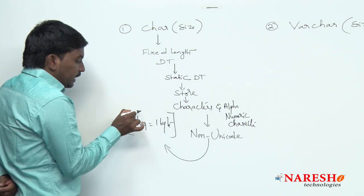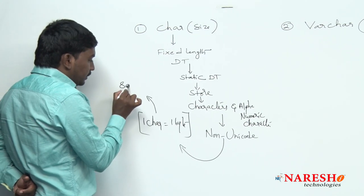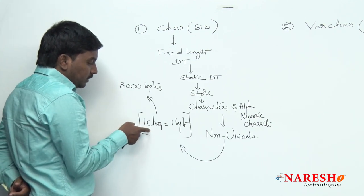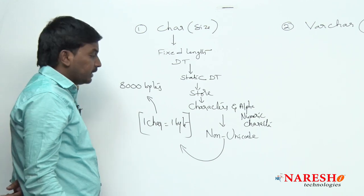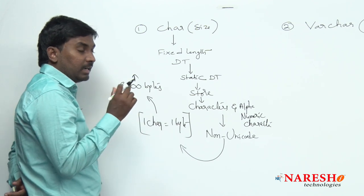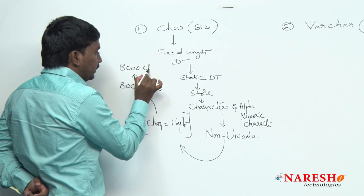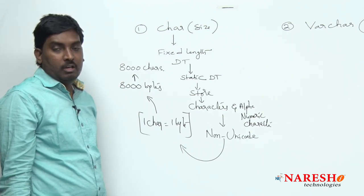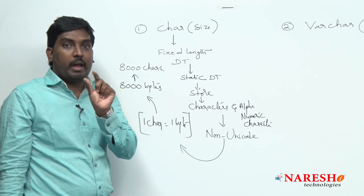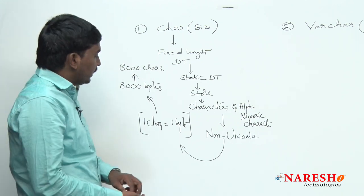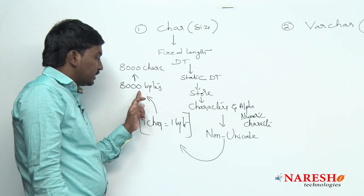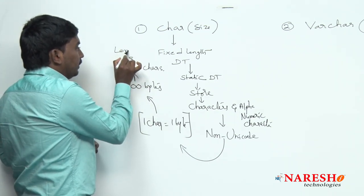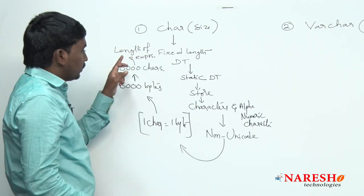The maximum size for CHAR is 8000 bytes. Since each character equals one byte of memory, that means the maximum length is 8000 characters. So within a single expression, you can send up to 8000 characters at a time.